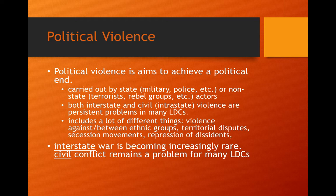We can distinguish between interstate and civil — or intrastate — violence. Interstate violence means wars between countries. An example is the Uganda-Tanzania war in the late 1970s, which led to the overthrow of Idi Amin's regime. Civil conflict is fought within the borders of a country. An example is the Naxalite insurgency in northeastern India, where Maoist insurgents have for some time waged war against the government, wishing to eventually overthrow it — the state versus a rebel group within one country.